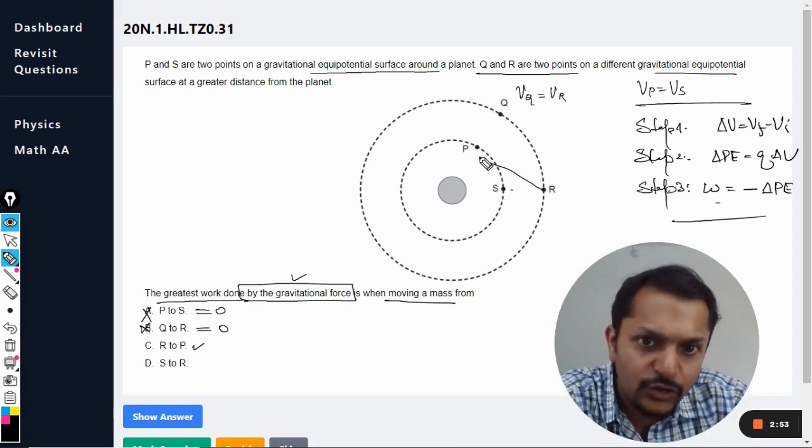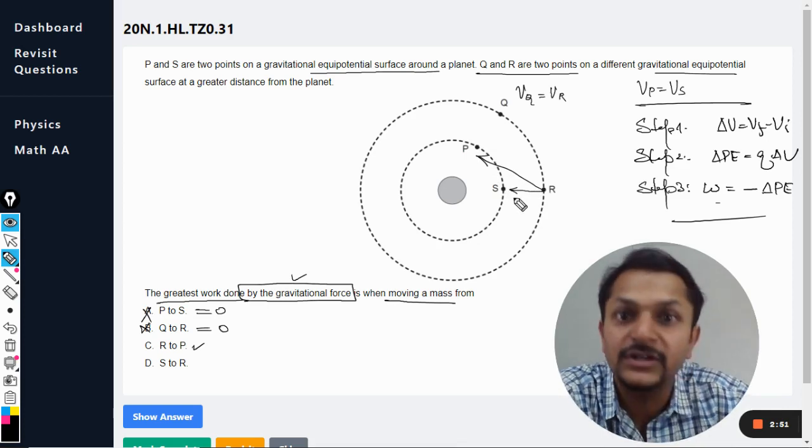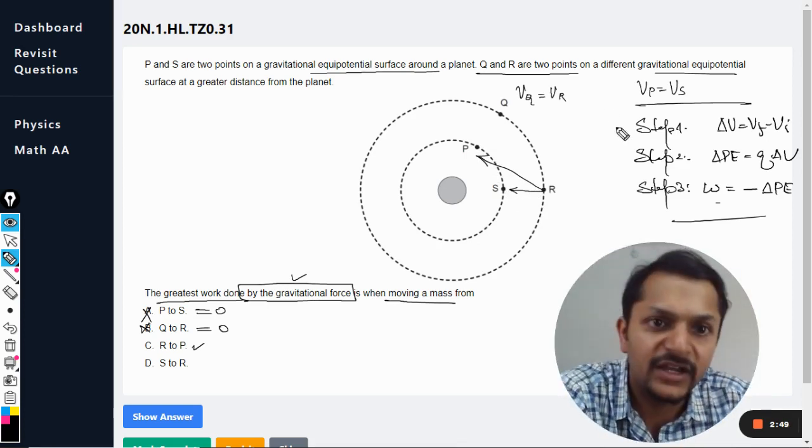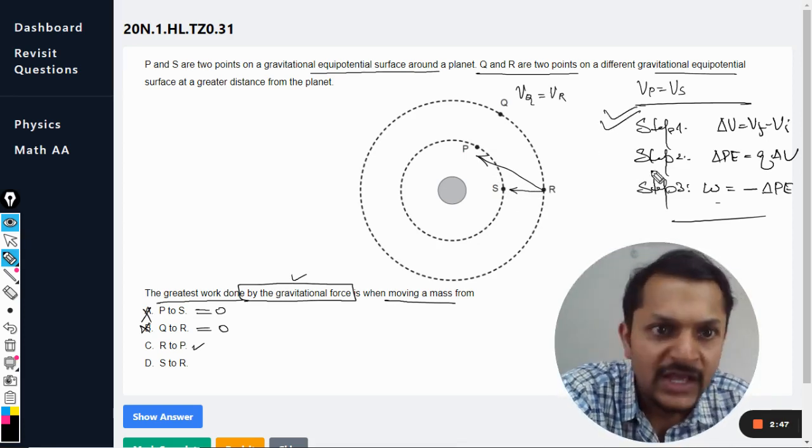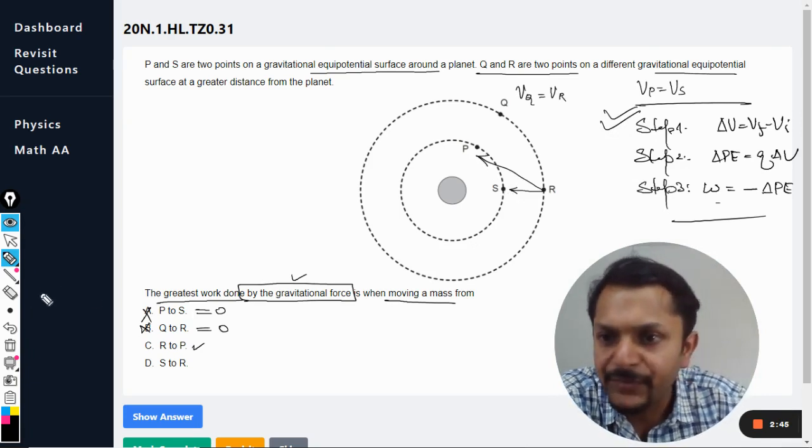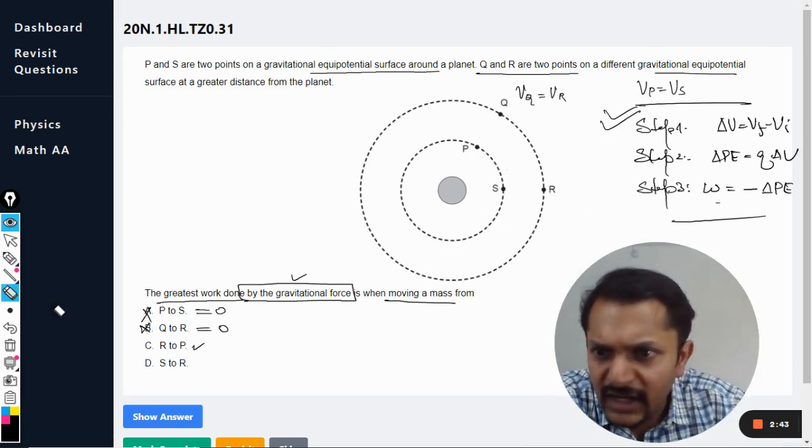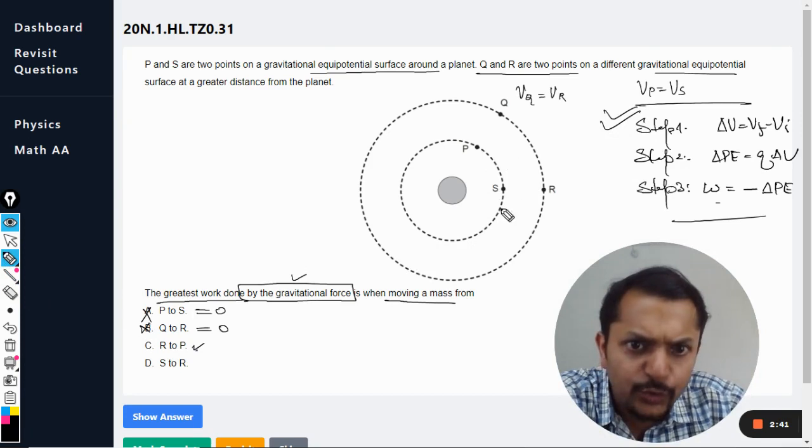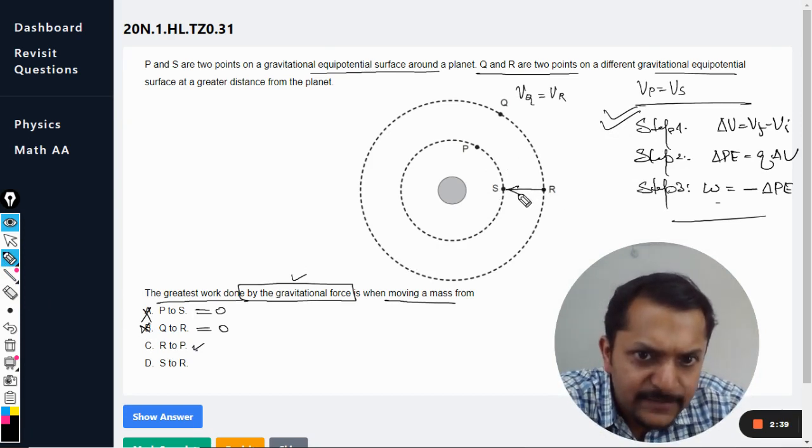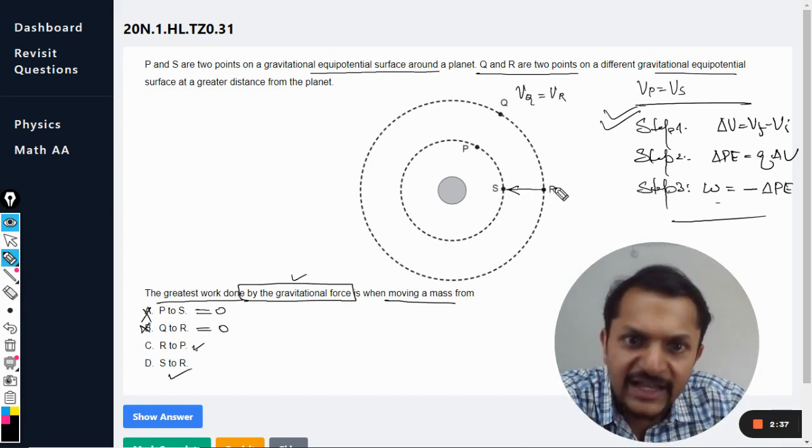So either it goes like this or it goes like this, the work done will be same. Be very careful, these are the steps we want to follow. So the potential of P and S are the same, so instead of thinking from R to P, we think from R to S. And the D option is S to R.